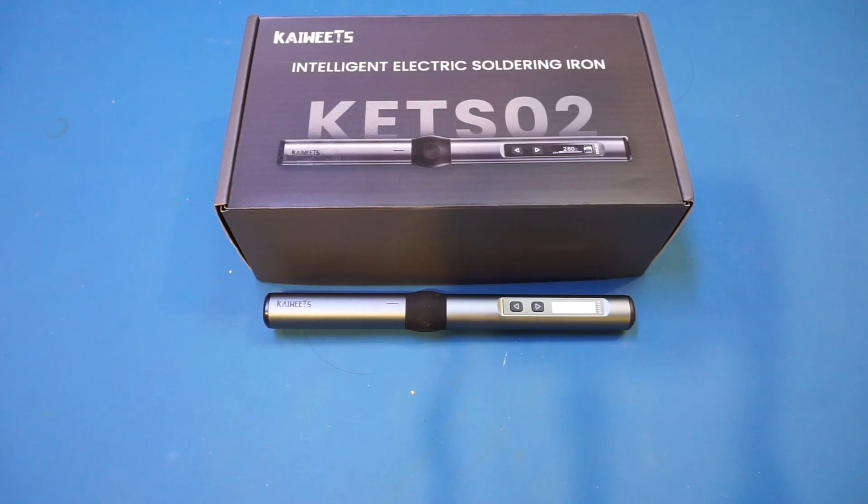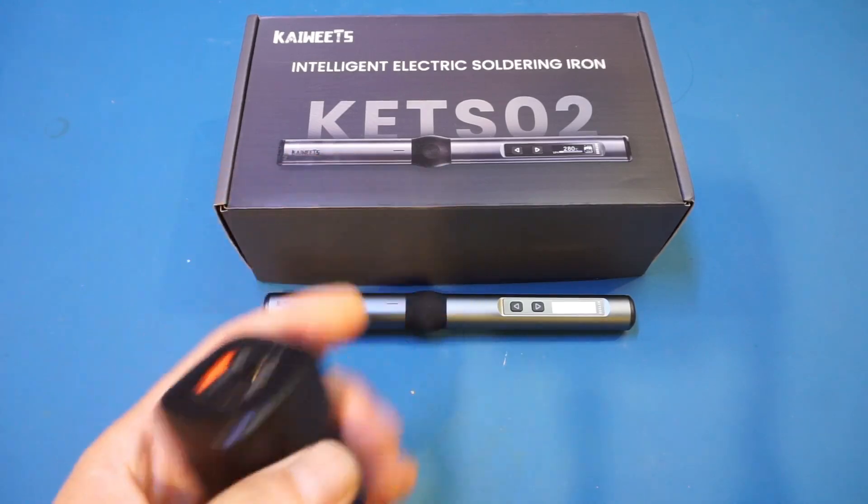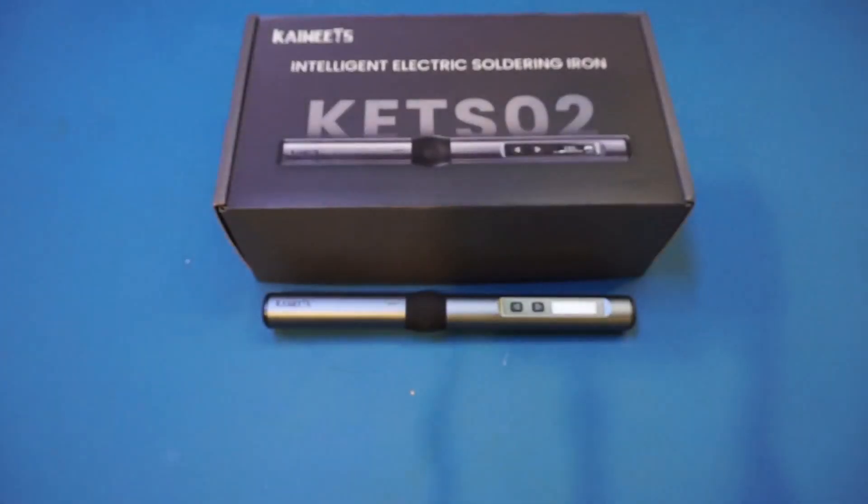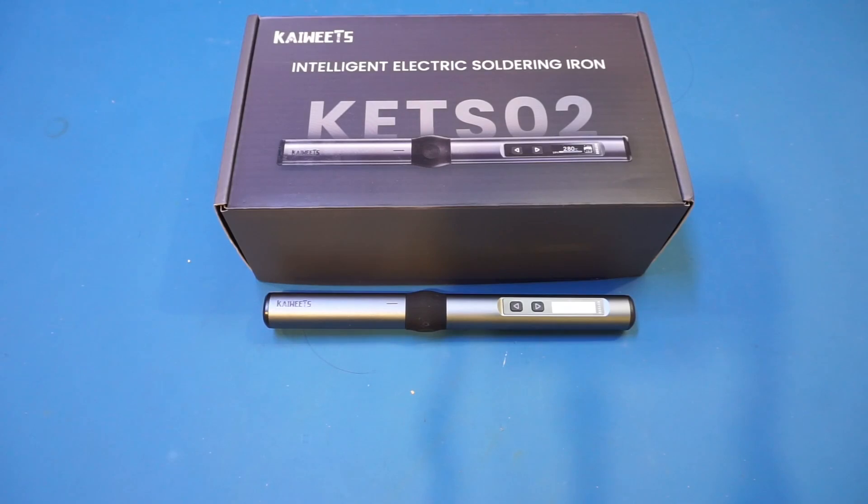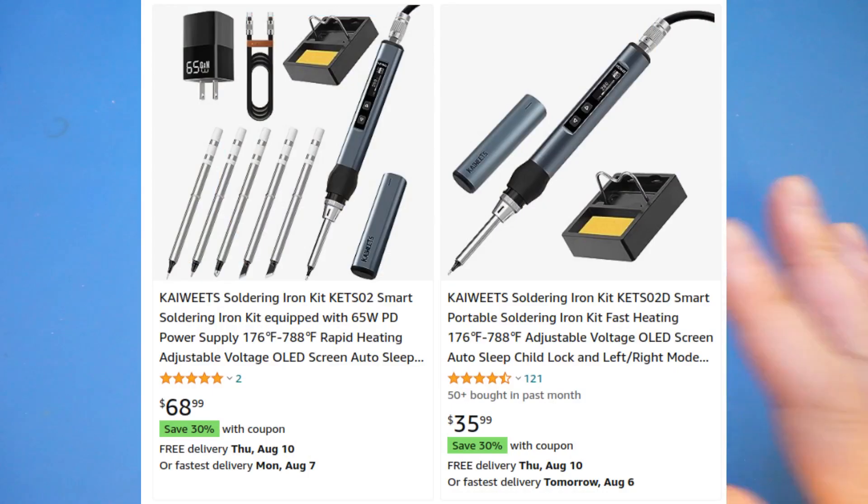The one they sent me is a kit. Besides the usual stuff, you also have a charger and some spare soldering iron tips. I believe they actually have two different kits: one is what I have here, the other one is just for the soldering iron itself which is sold as KETSŌ2-D.